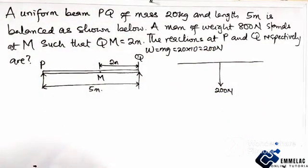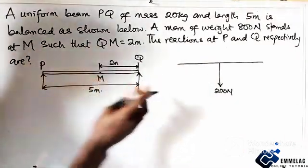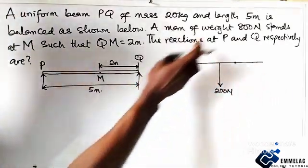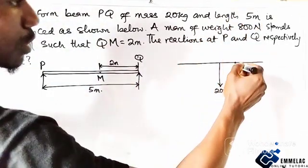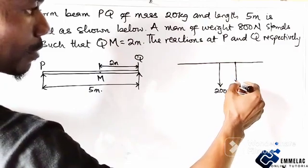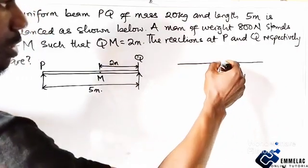Alright, with this. So here, this man here, we're given that the weight is 800. So it's also acting downward. This is 800 Newton. Take note, this is the center.